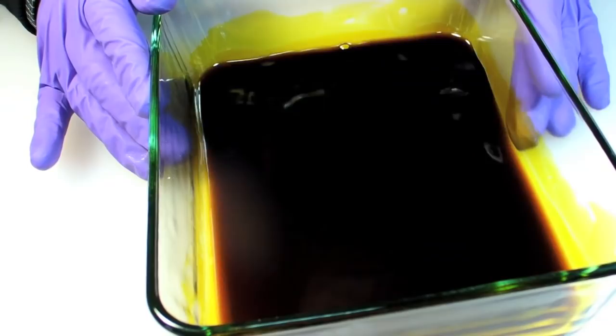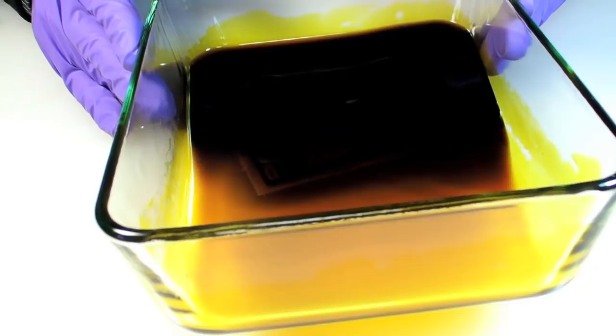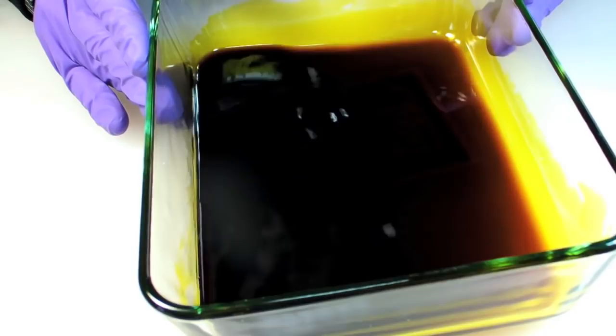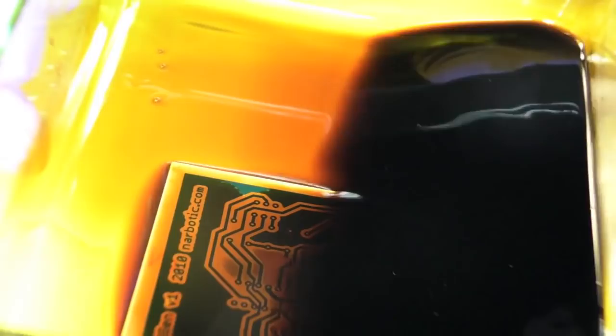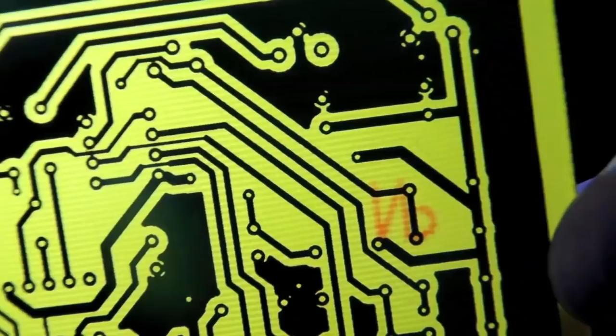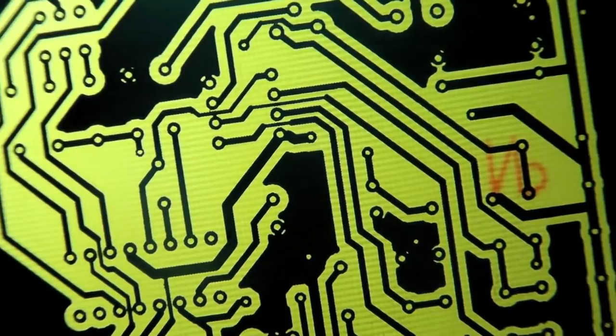The entire etching process takes around 20 minutes. When I first put the board in, I'll agitate for about 30 seconds to a minute. Then I'll leave it alone, come back every few minutes to check on it, and agitate a bit more. This one's almost done, but still has some areas in the middle that need a bit more time. Once I'm sure all the exposed copper has been removed, I give the board another quick rinse and another close-up inspection.